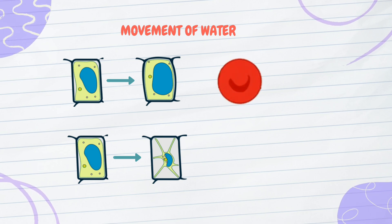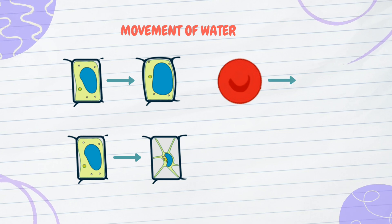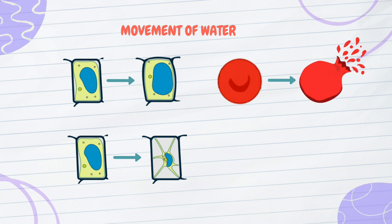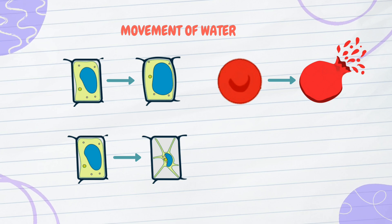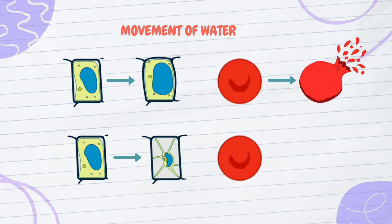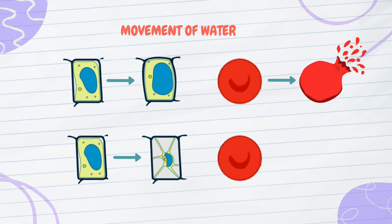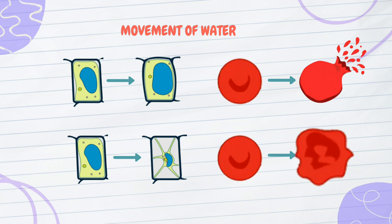When an animal cell is placed in distilled water, water moves into the cell and the cell expands until it bursts, because the animal cell lacks a cell wall to prevent overexpansion — the bursting of the cell is called lysis. When an animal cell is placed in a salt solution, water moves from the cell to the salt solution and the cell becomes dehydrated and eventually shrinks.